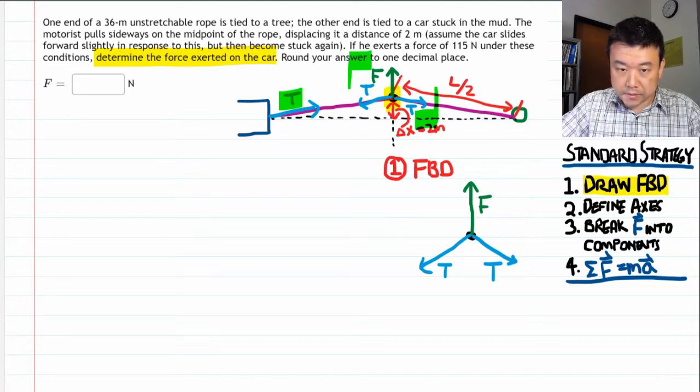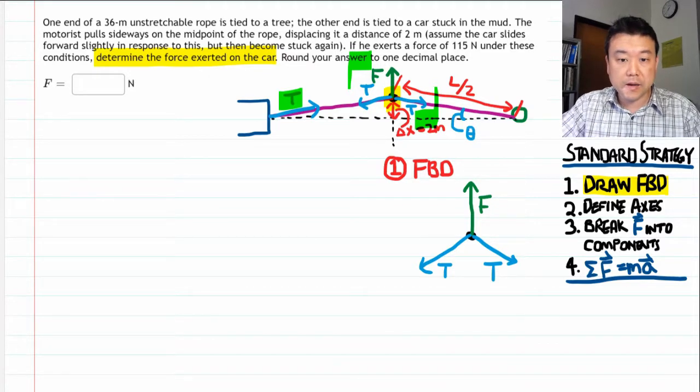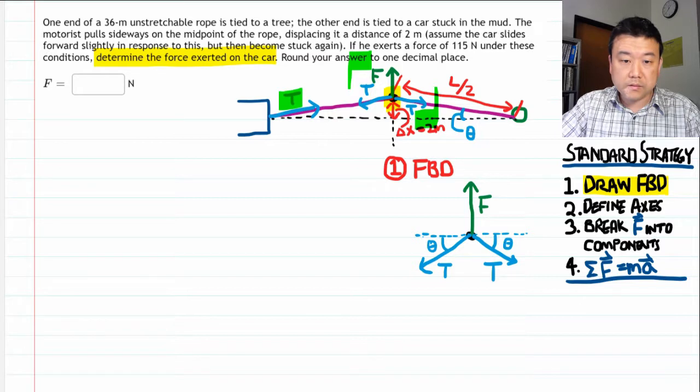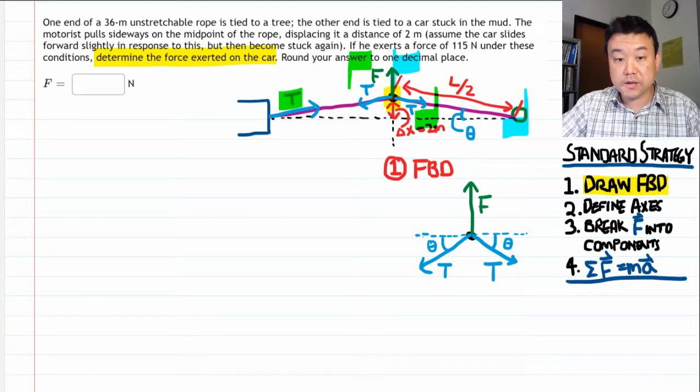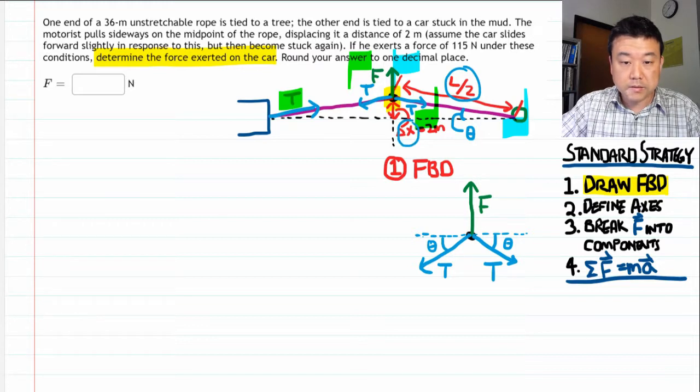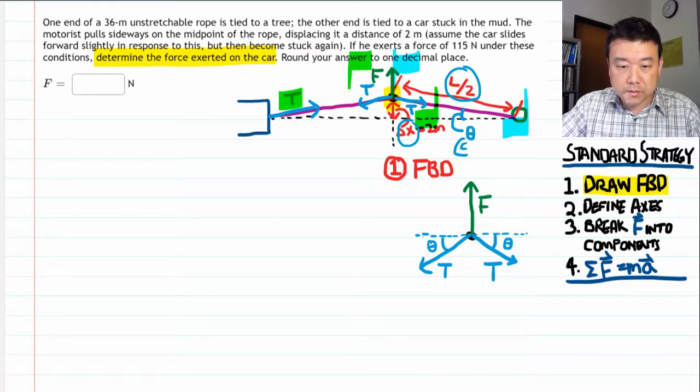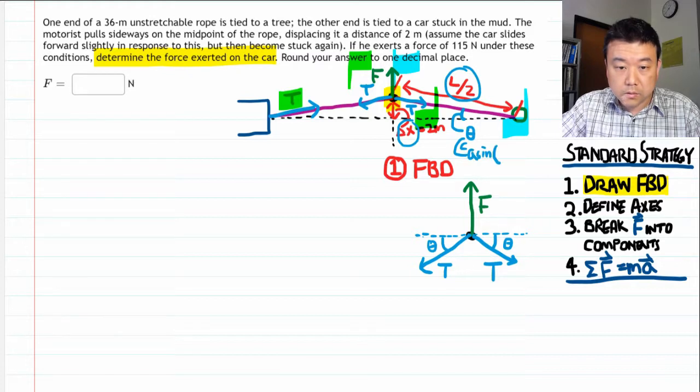So the angle I feel is easiest to express is this one here. Let me call that theta. And if you find that same theta on the free body diagram, you'll find them here and here. And staring at this geometry for a while, I hope you can figure out what expression theta has. So we have this L over 2. We have this delta x. So theta should be arc sine of delta x over L over 2. That's why I was labeling those lengths.